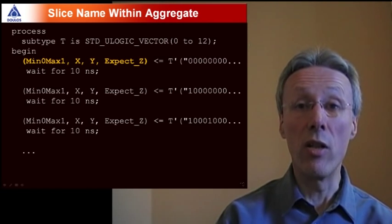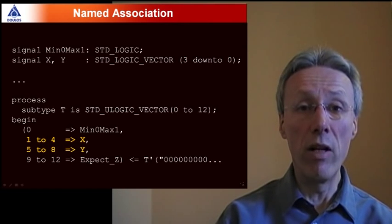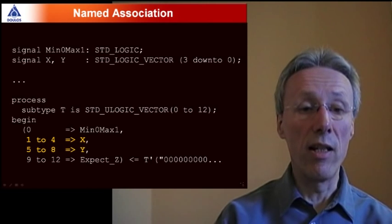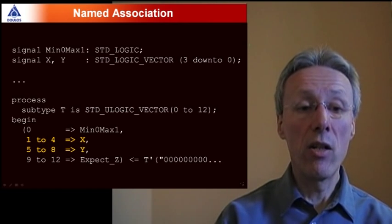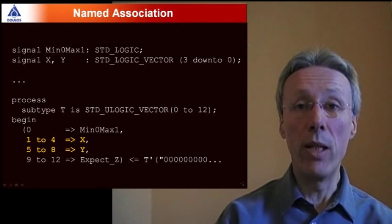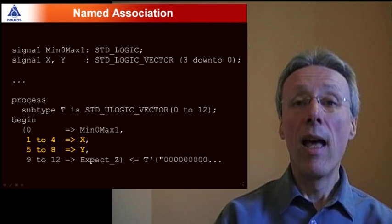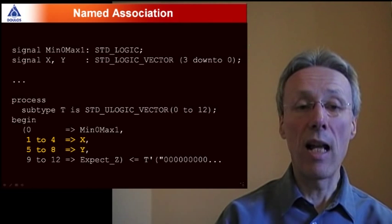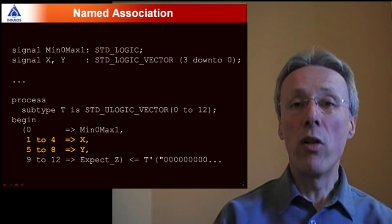Perhaps it's a little bit clearer if we rewrite this using named association. So just to help you understand what's going on here I've rewritten that same aggregate using named association. So here on the left hand side of the assignment you can see an aggregate built up by using name. So element zero of the aggregate is associated with min zero max one. Then a slice one to four is associated with vector x and this is the new thing. Prior to VHDL 2008 you could have written one to four arrow within an aggregate but what would happen there is that x would have to be a scalar and that same scalar value would be associated with each of the individual elements. Well what we're doing now is grouping together elements one to four, five to eight and so on and associating that group of elements or slice with a vector which is exactly what we want in this case and that's neat.